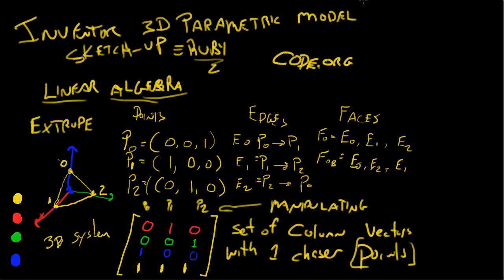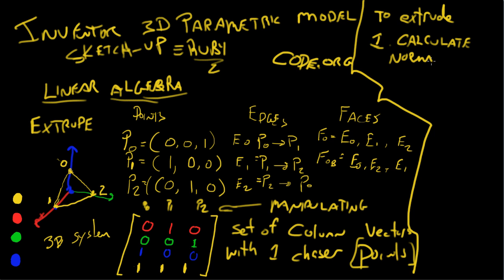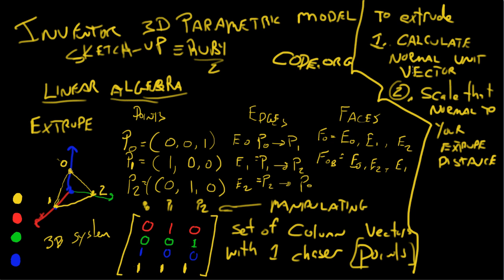This, in effect, is what we'll be doing. Now that you have this, this is the set of steps to essentially do an extrude. To extrude, what do you do? One, you calculate the normal unit vector. And you're going to end up doing that by taking the cross product of any two vectors in the plane. Two, you scale that normal to your extrude distance. And then three, you just add that vector to each point.